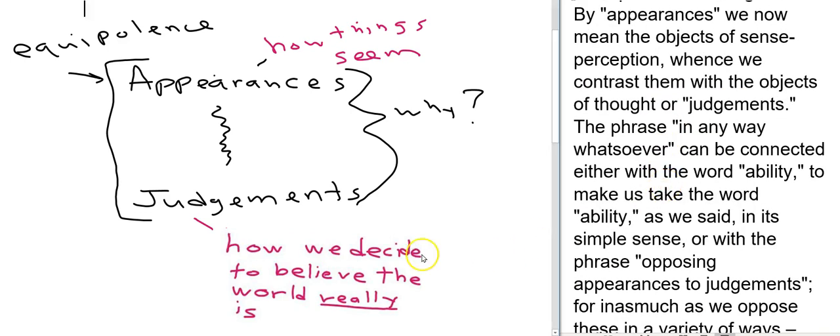Now he goes on to say that when he wants to contrast appearances and judgments he's not just saying it has to be a judgment with an appearance or an appearance with a judgment. He says we do this in any way whatsoever. So maybe we contrast judgments with judgments. For example if two people are saying here's how the world really is and they contrast with each other that's an opposition of judgments.